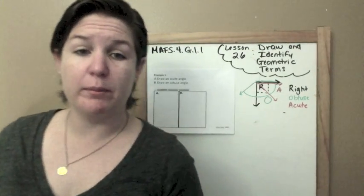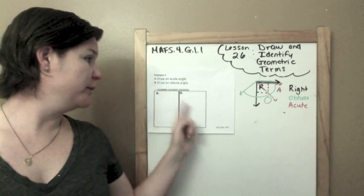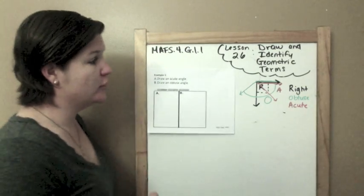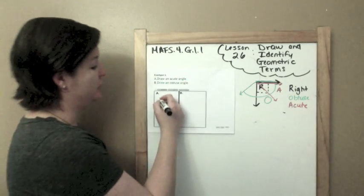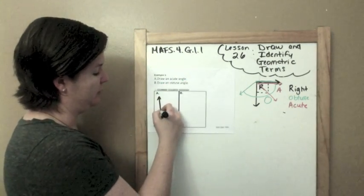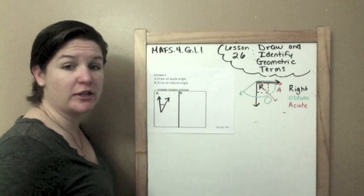So example one, part A says that we need to draw an acute angle. Part B says we need to draw an obtuse angle. Well, that's easy. An acute angle is an angle that is less than a right angle. So I just need to draw an angle that looks kind of skinny. So here's one right. I'm going to make it look kind of skinny. And there is my acute angle.